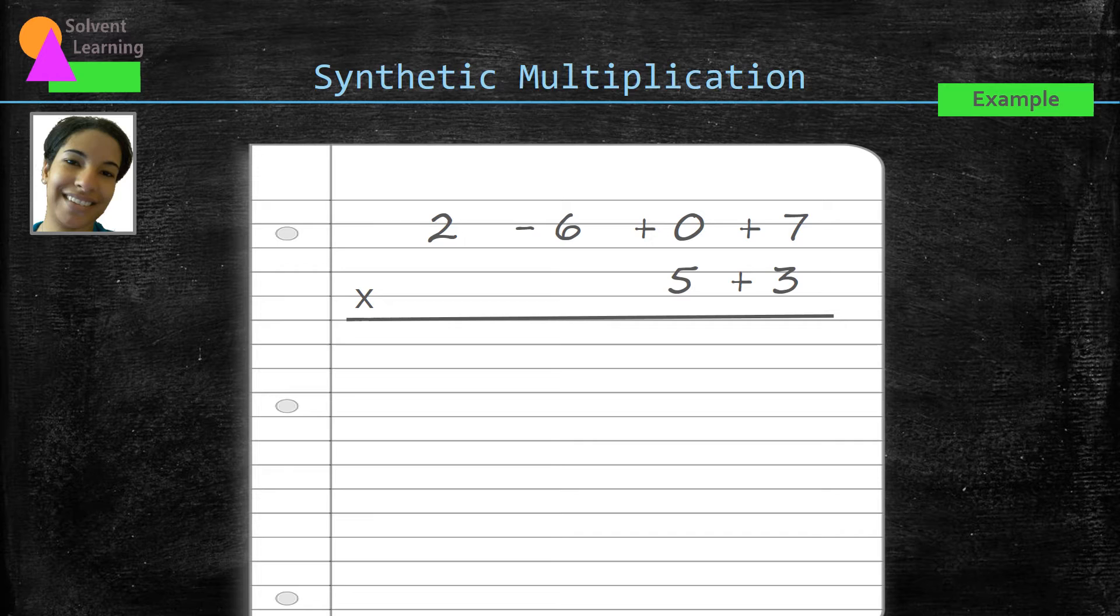Now we can multiply these numbers together just like we would a regular multiplication problem. So we start with the last digit in the second row. That plus three, we'll multiply it by each number that was from the first polynomial.